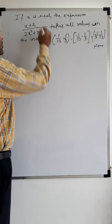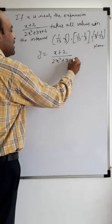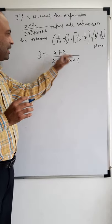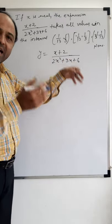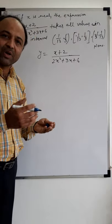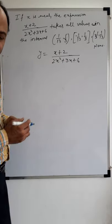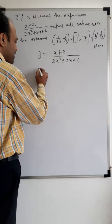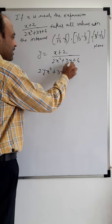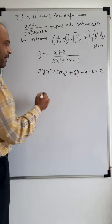So how will you start? Let's say y equals the expression (x+2)/(2x²+3x+6). Now what I am going to do is convert y into x — express x in terms of y. Since x is real, the discriminant is going to be greater than or equal to 0, and then we will find the value of x. We start by multiplying through by y, giving: 2y·x² + 3xy + 6y - x - 2 = 0.